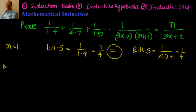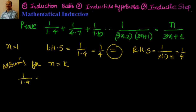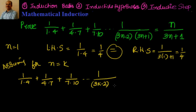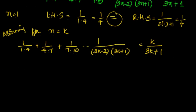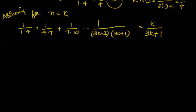Now assume it's true for n=k. We then have to prove it also holds for n=k+1. Assuming true for n=k means: 1/(1·4) + 1/(4·7) + 1/(7·10) + ... + 1/(3k-2)(3k+1) = k/(3k+1). This is what we have assumed to be true.